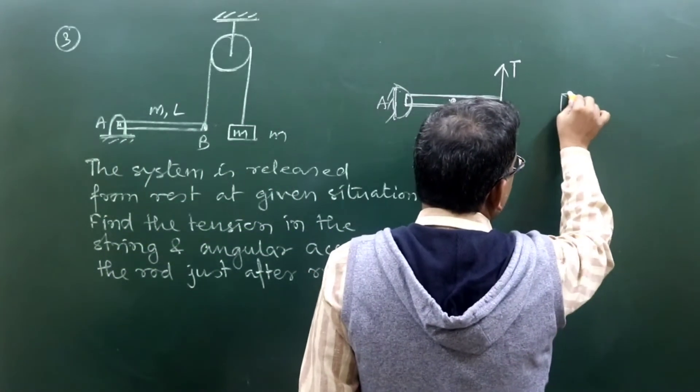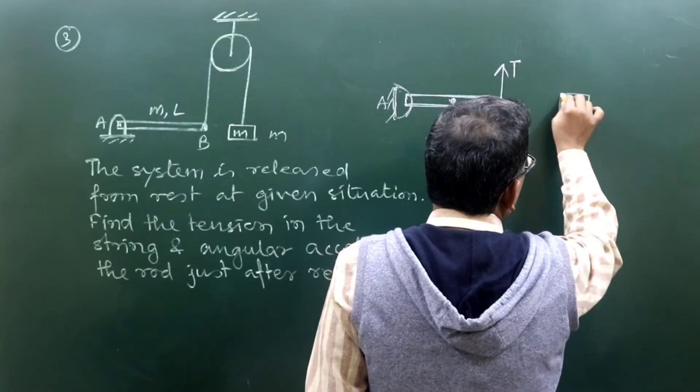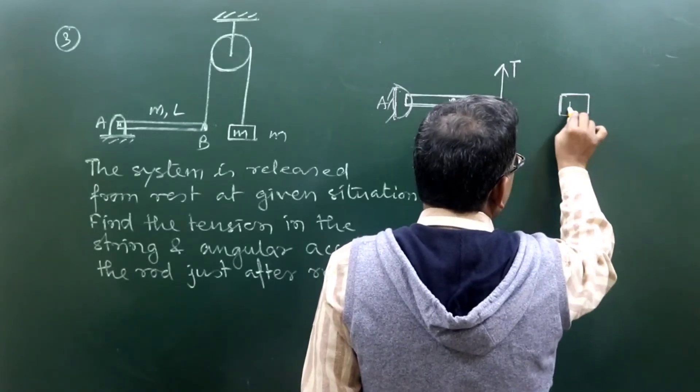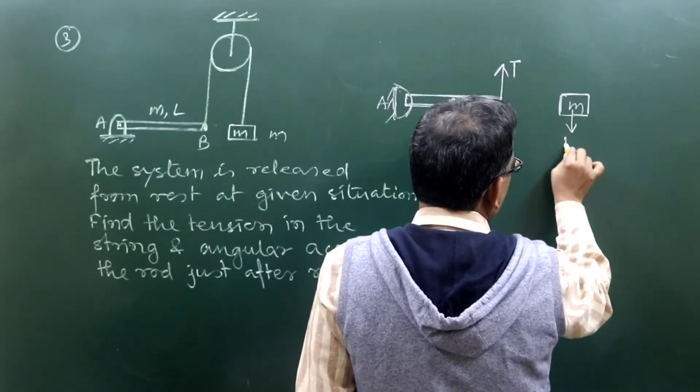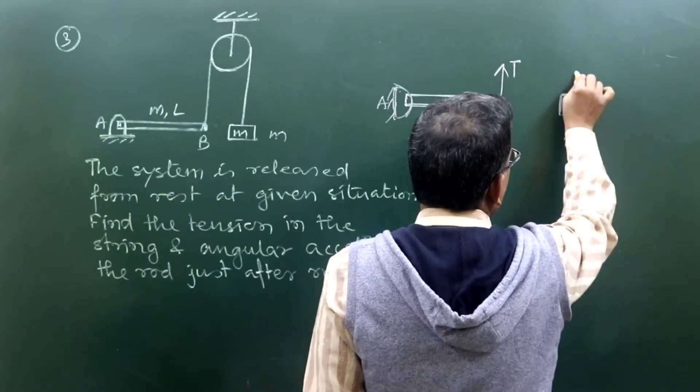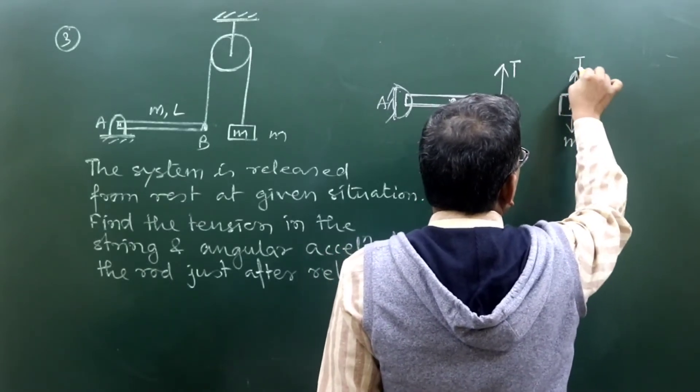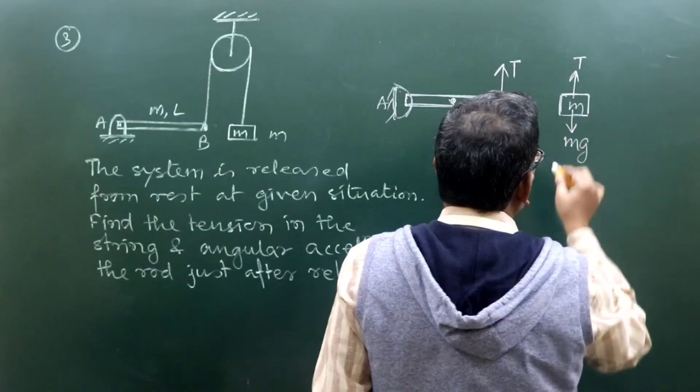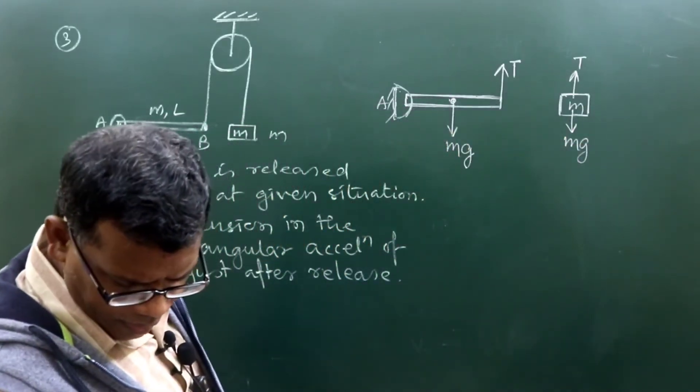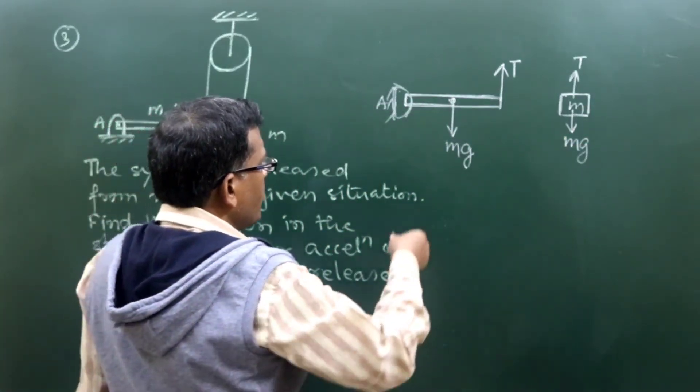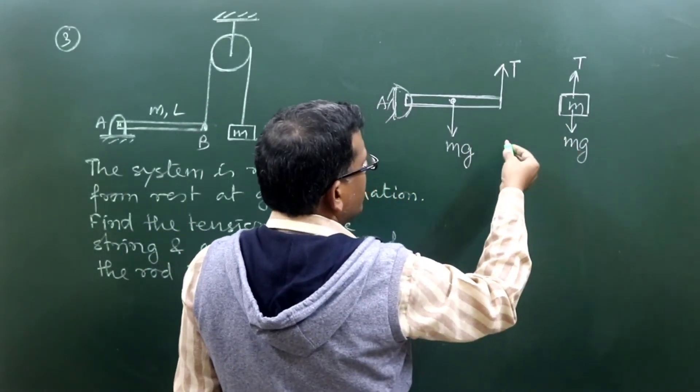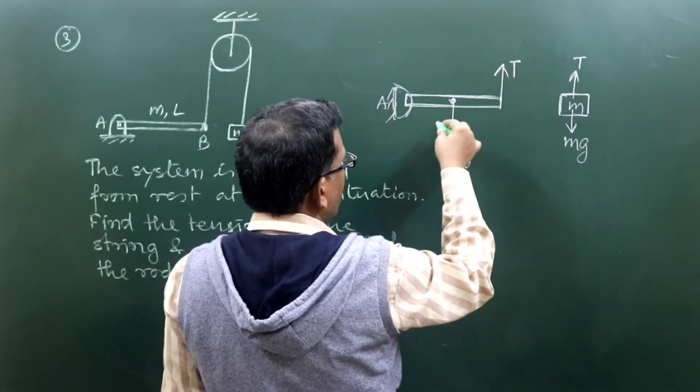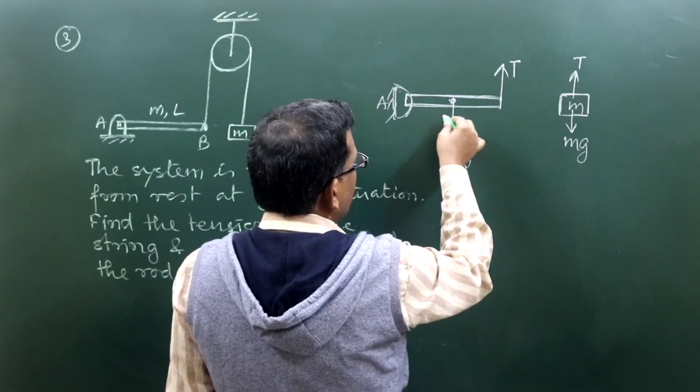On the other side, the block is concerned. The block of mass M, it too should have its weight Mg acting downward, T should be acting upward. Now what kind of motion will take place primarily as soon as it is released? This is t equals zero. As soon as it is released...